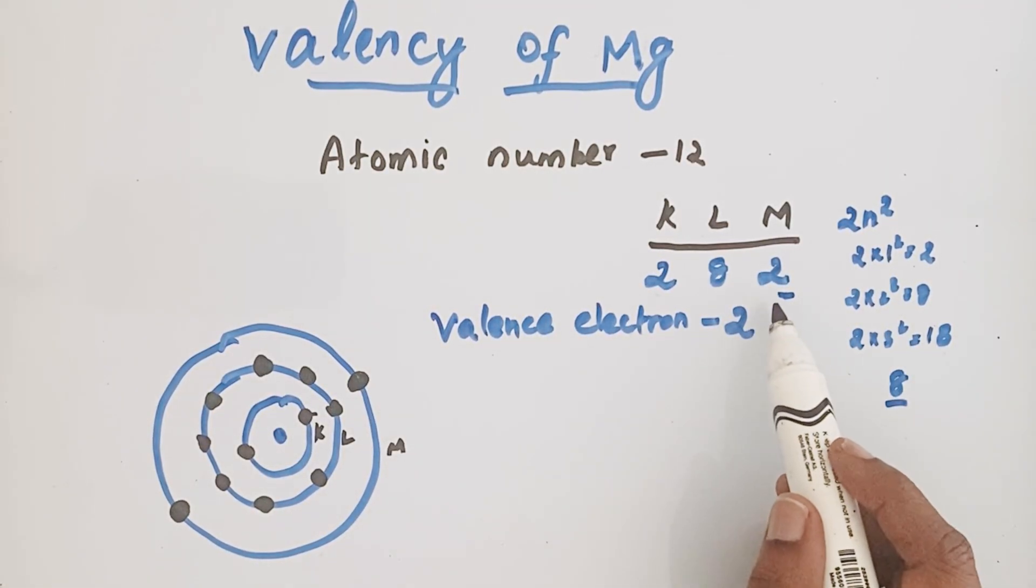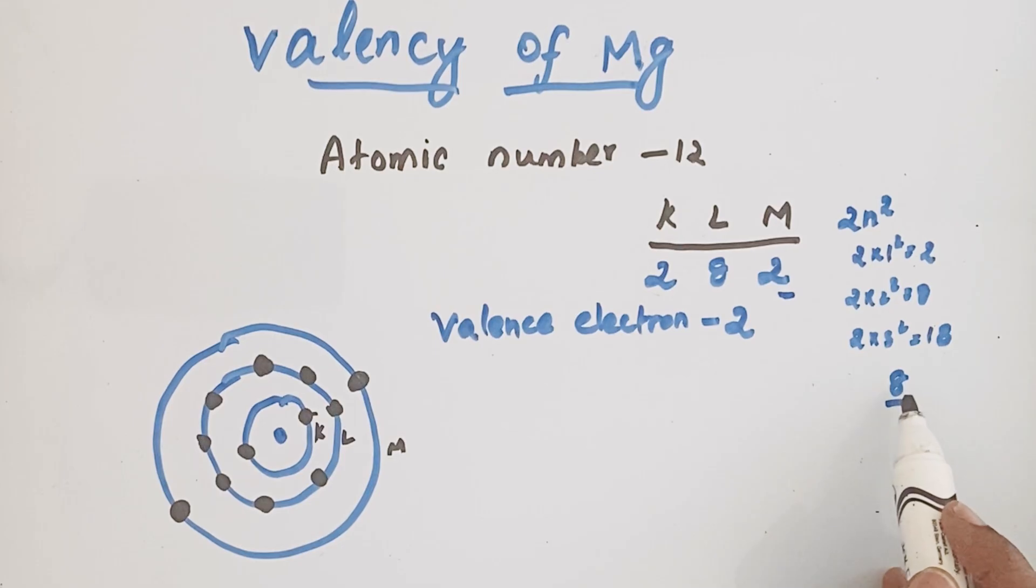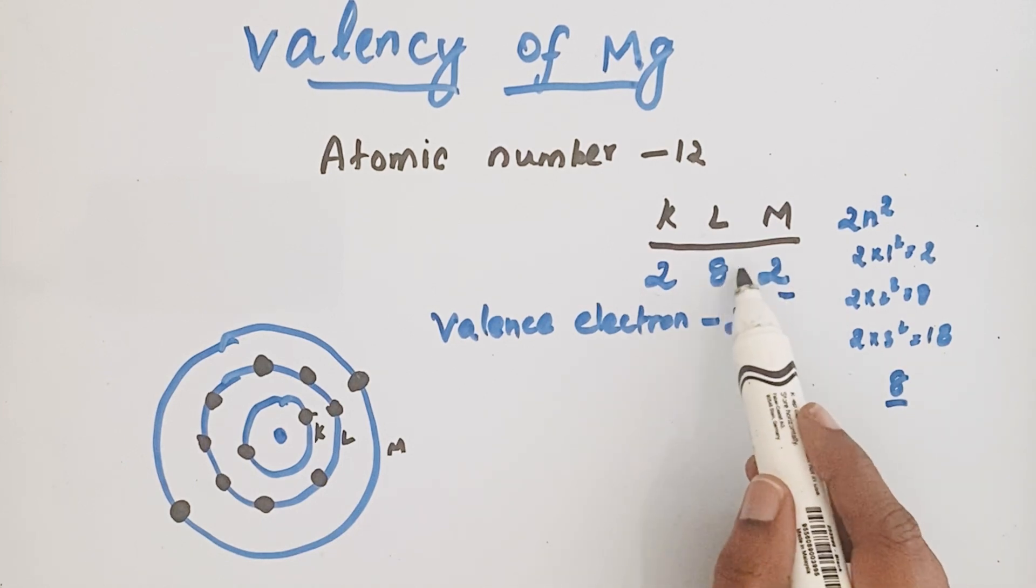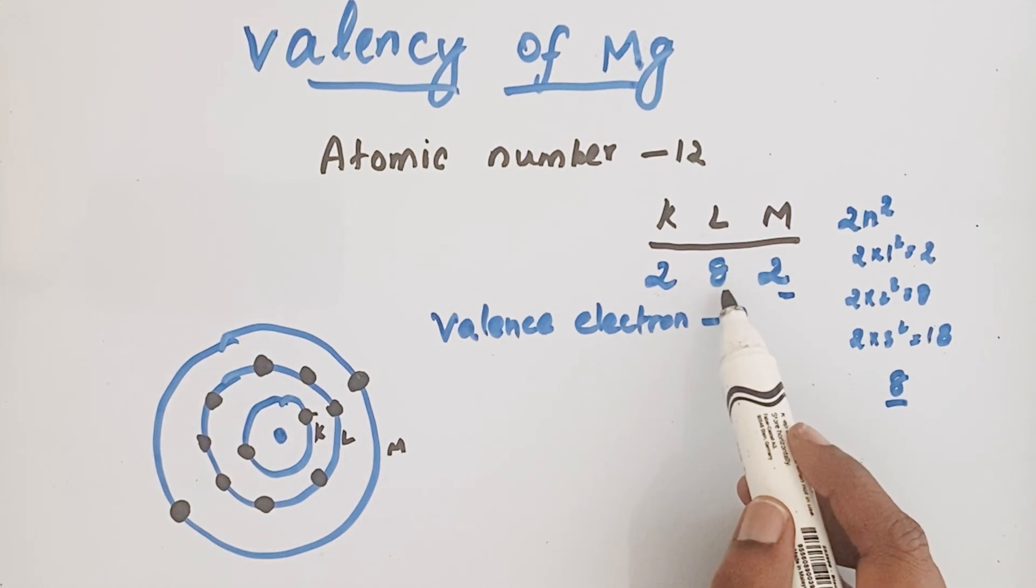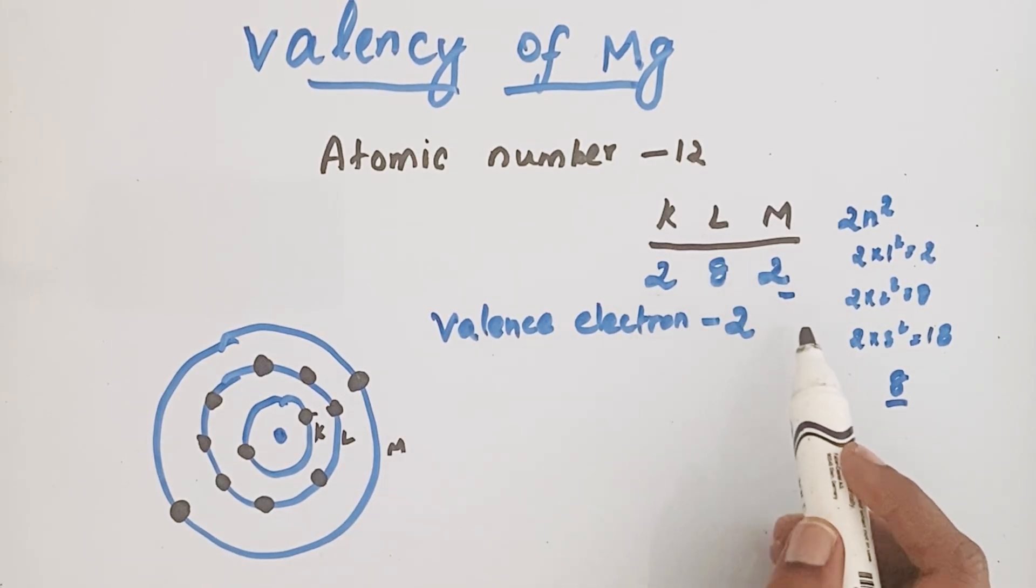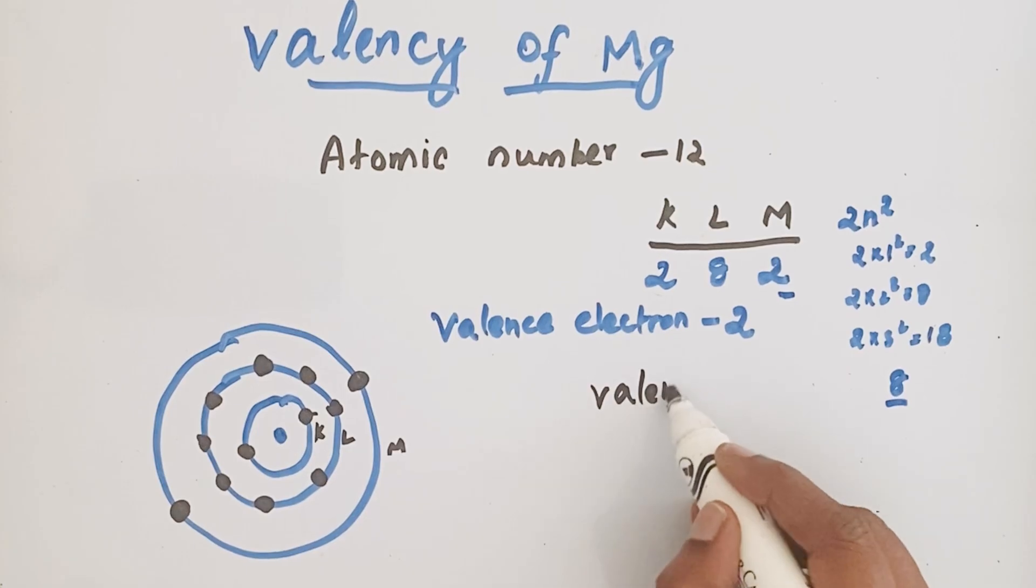Now to get octet configuration this magnesium atom could try to lose electrons or try to get 6 electrons. To get 8 electrons, magnesium would need 6 electrons. But if it loses 2 electrons the inner electronic configuration is 8. So instead of gaining 6 electrons, losing 2 electrons is very easy for magnesium atom. So magnesium tries to lose these two electrons while making a compound with other atoms. So the valency of magnesium is 2.